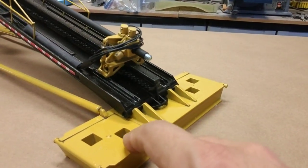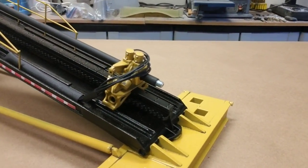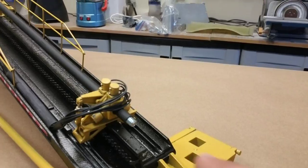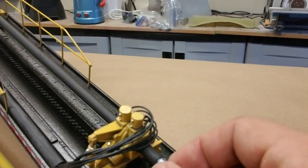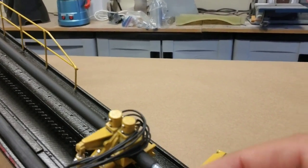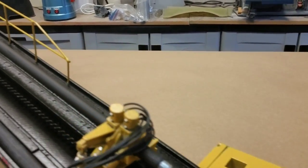This is authentic Vermeer yellow touch-up paint right from the Vermeer dealer. We got all of the hydraulic hoses modeled. We've got a scale drill pipe in there that looks like an IF thread to me if I had to guess.